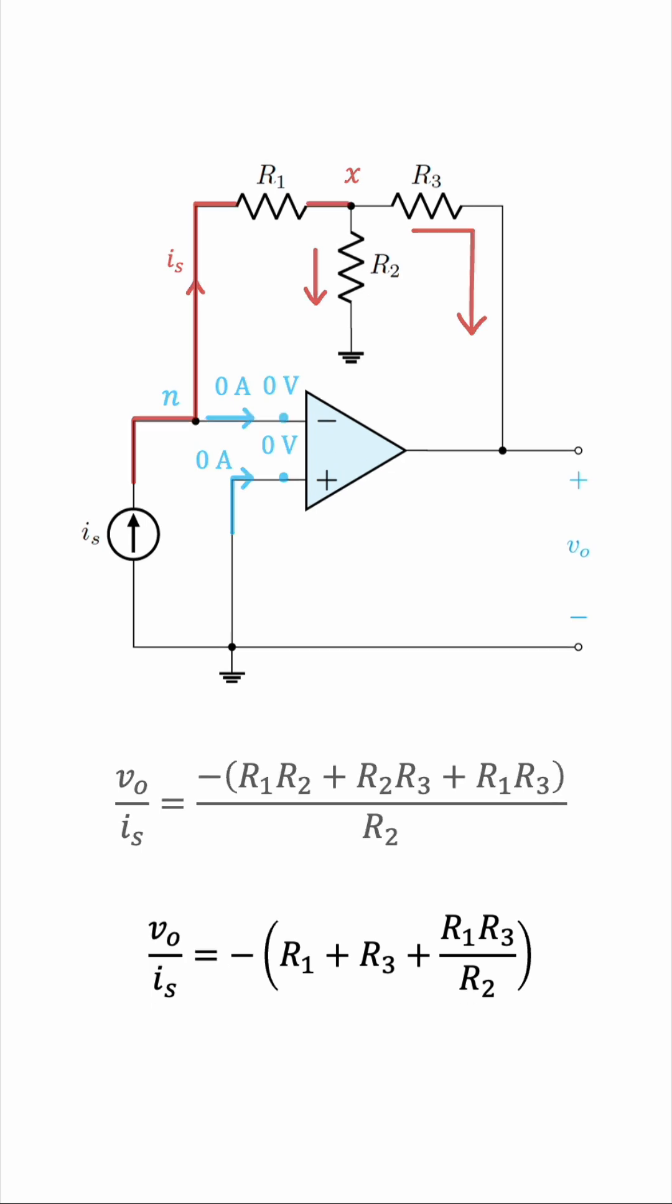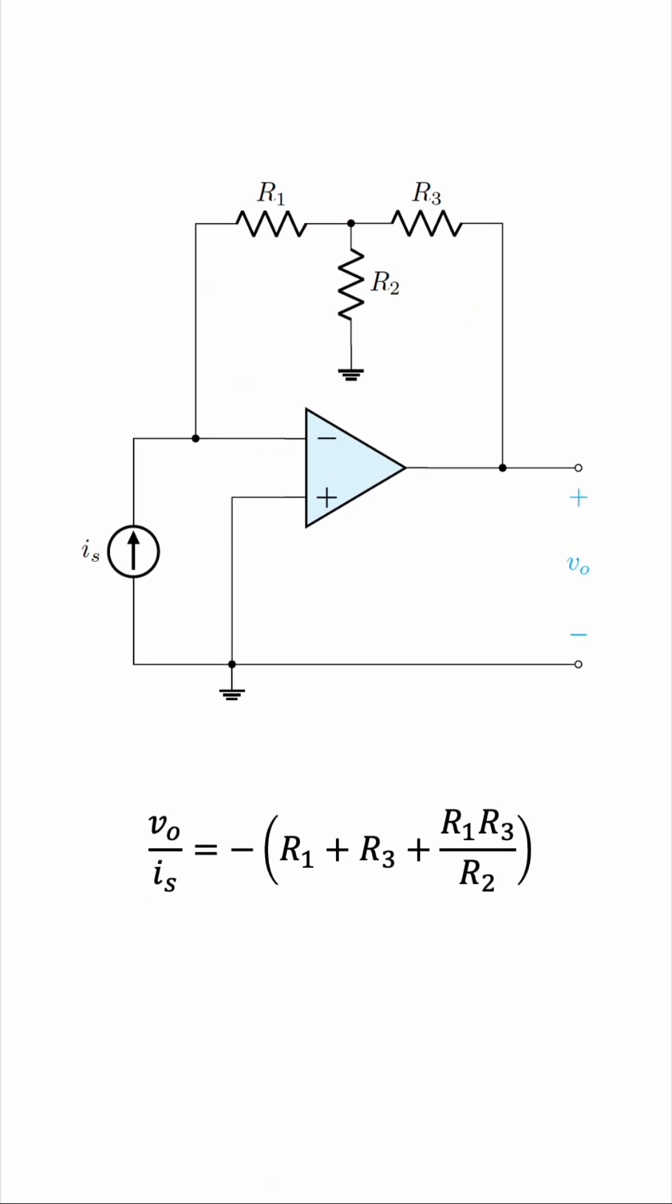So that's it. This is the ratio of V0 to IS in the original op-amp circuit. If you'd like to see more videos on op-amps, make sure to tell me this in the comments down below.